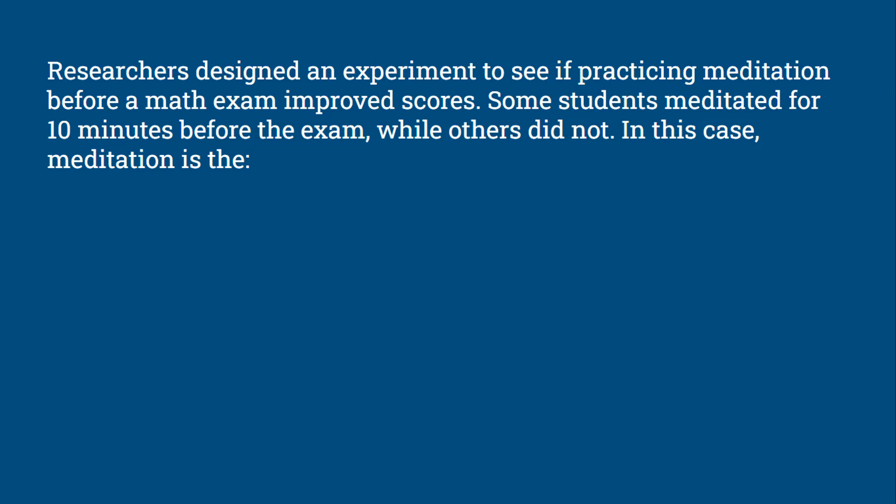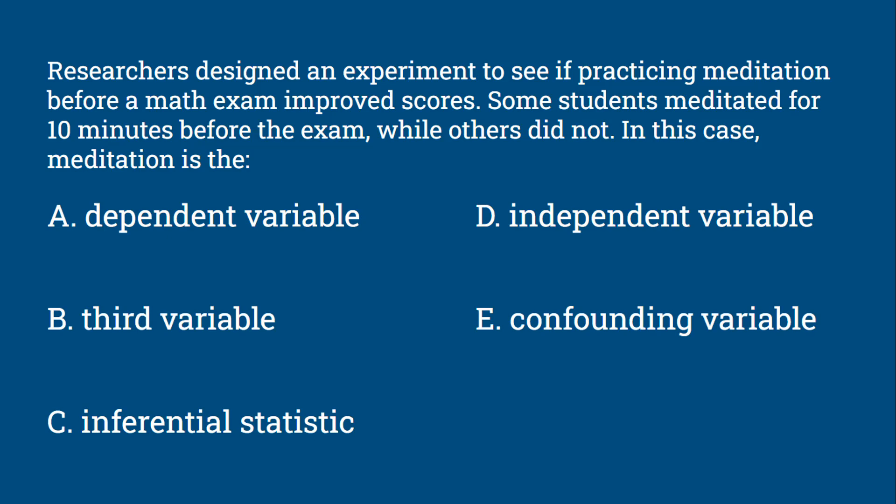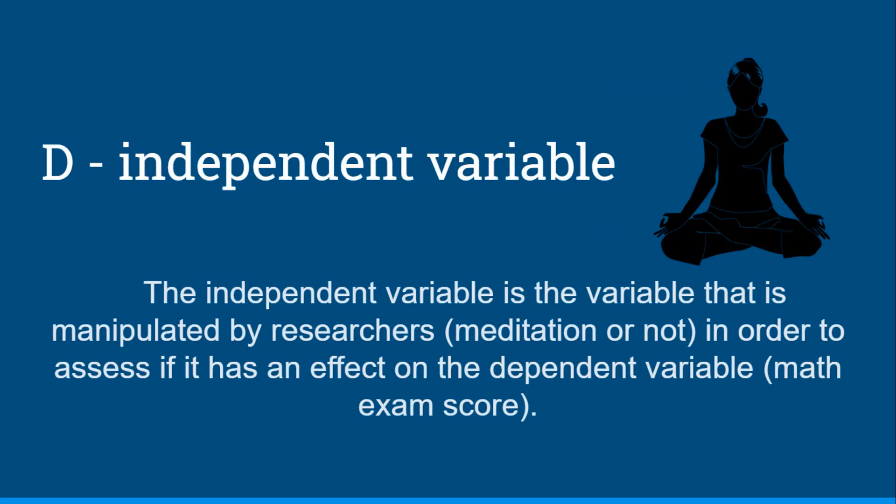Researchers designed an experiment to see if practicing meditation before a math exam improved scores. Some students meditated for 10 minutes before the exam while others did not. In this case, meditation is the: dependent variable, third variable, inferential statistic, independent variable, or confounding variable? Meditation would be the independent variable — the variable that is manipulated by the researchers. Participants are meditating or not, independent of any other cause. This is done to see if there's an effect on the dependent variable, which in this case would be the math exam score.